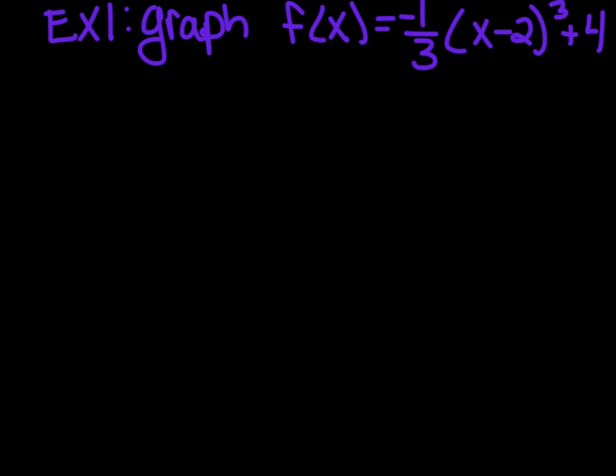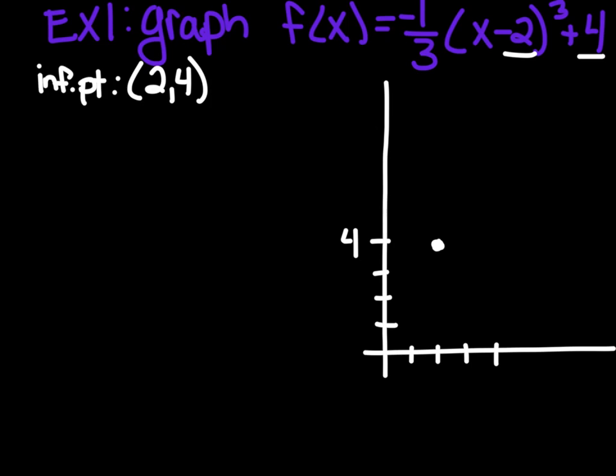So now, first, some example problems. First one, we're going to graph f(x) = -1/3(x-2)³ + 4. So the first thing we want to find is our inflection point. That's always at (h,k), so that's going to be at (2,4). So there, we put it on the graph. All right, now to plot other points, we're going to look at this. We're going to say, well, I know it's negative. So instead of going down and up, it's going to go this way.